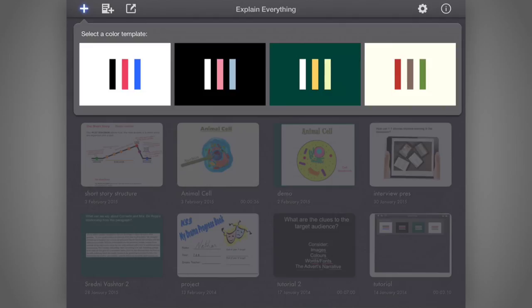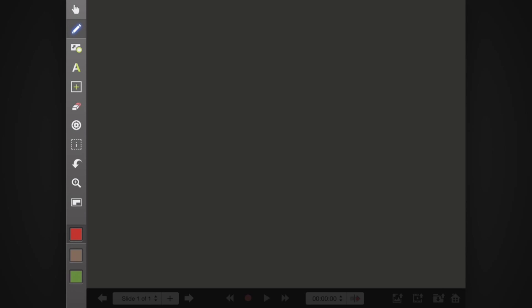Select a template which takes your fancy. Now this is the Explain Everything dashboard. Two main toolbars. Tools on the left hand side for adding text, adding pictures and formatting your words and images. Toolbar at the bottom for recording, saving and sharing your work.